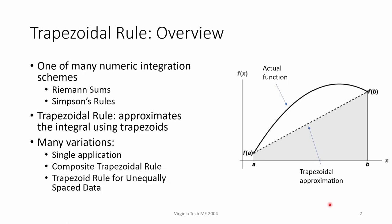The trapezoidal rule is one of many numerical integration schemes. You might have heard of Riemann sums from your calculus class. If you recall, Riemann sums approximate the integral using a bunch of rectangles. You probably haven't heard of Simpson's rules. Simpson's rules use what's called an interpolating polynomial to integrate the data. The trapezoidal rule is similar to Riemann sums, but instead of using rectangles, it uses trapezoids. I hope this is obvious from the name.